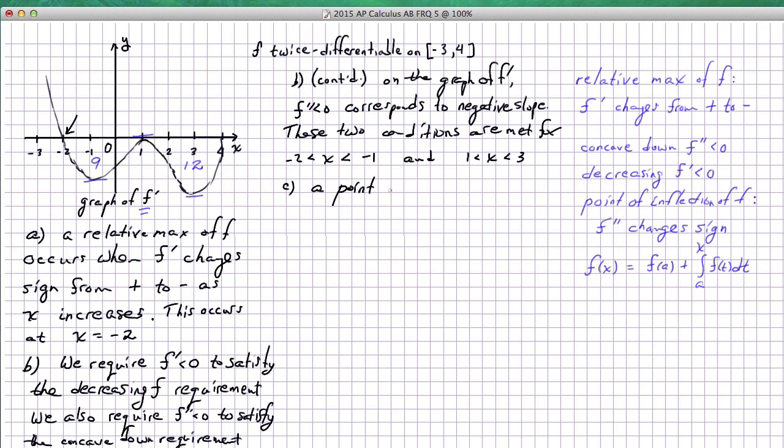Let's explain that. A point of inflection occurs where f double prime changes sign. And now we'll translate that into this situation, namely that on a graph of f prime, this corresponds to the slope changing sign.